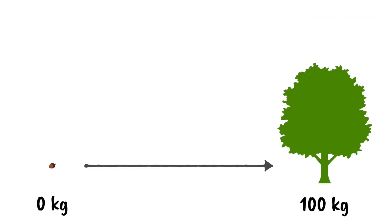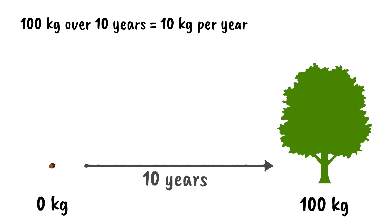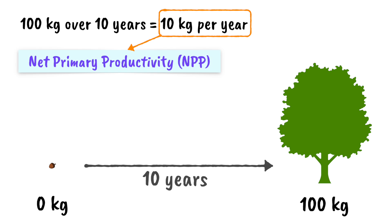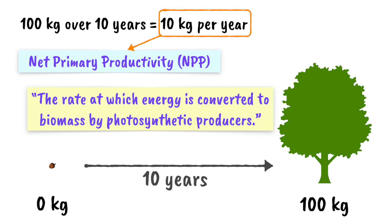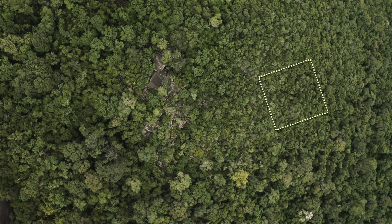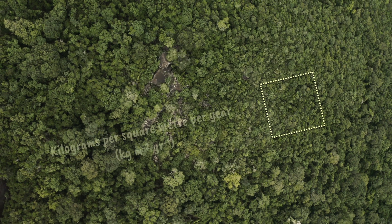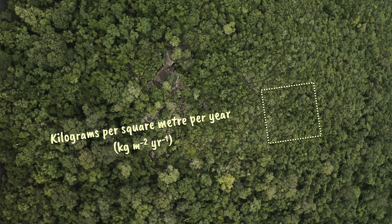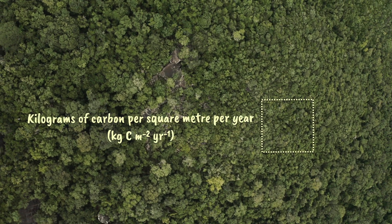Let's put some numbers to it. Let's say our tree has spent 10 years producing glucose, and the portion of this glucose contributing to physical plant biomass is 100 kilograms. 100 kilograms built up over 10 years comes to 10 kilograms per year, and this is effectively the net primary productivity of this tree. The definition for NPP is the rate at which energy is converted to biomass by photosynthetic producers. We tend to express this over a given area, with units like kilograms per square meter per year, or kilograms of carbon per square meter per year.